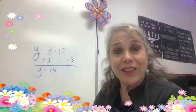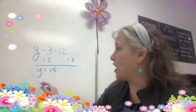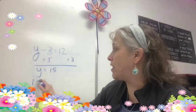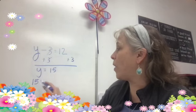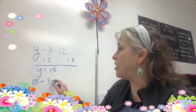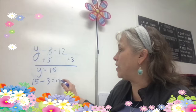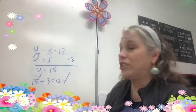So, we got our answer. Now we are going to check it — we are going to take that number and plug it in for y. 15 minus 3 is equal to 12, and it checks out.